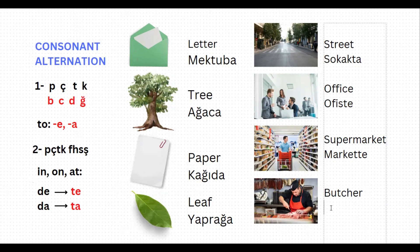And lastly, we have 'butcher' here, which is 'kasap' in Turkish. If you want to say 'in the butcher,' it needs to be 'kasap-da.' But this word is ending with p, which is one of peçeteğe or fehseşe, so this suffix needs to change and becomes ta. In the butcher: kasapta.